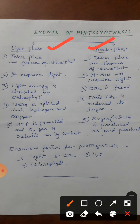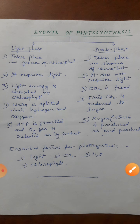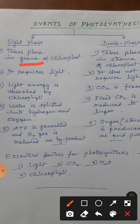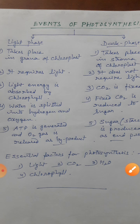Light phase takes place in presence of light. Isliye ye grana mein hota hai. Light phase hota hai grana mein, aur dark phase hota hai stroma mein. Light phase mein light chahiye hi — bina light ke reaction nahi hoga. Lekin dark phase mein light ki zaroorat nahi hai. It does not require light — woh din mein bhi ho sakta hai, raat mein bhi ho sakta hai. Dark reaction ke liye enzymes ki zaroorat hoti hai, light ki zaroorat nahi hoti.